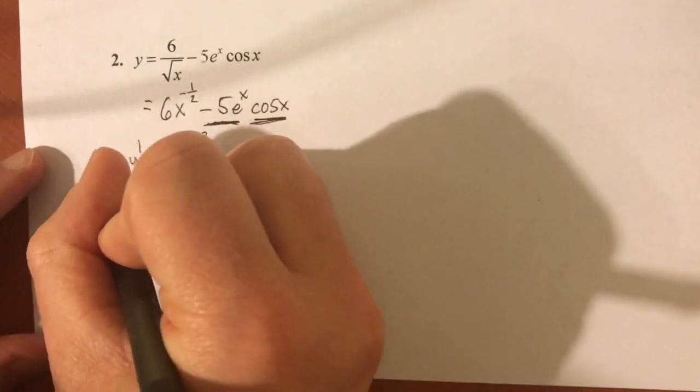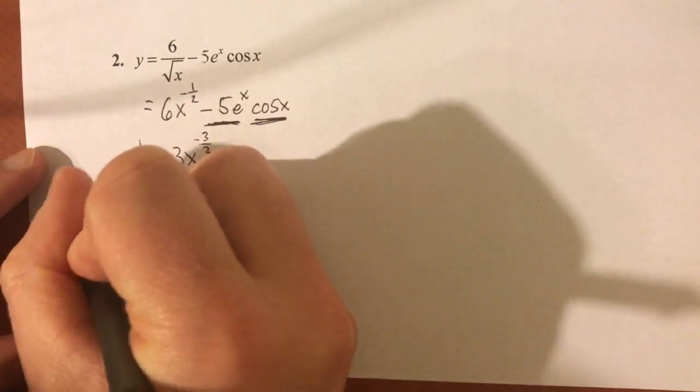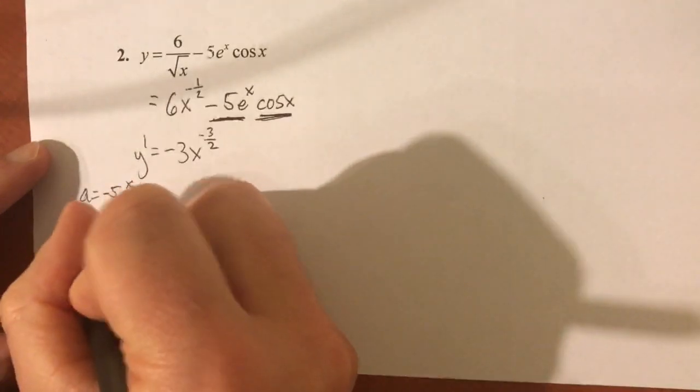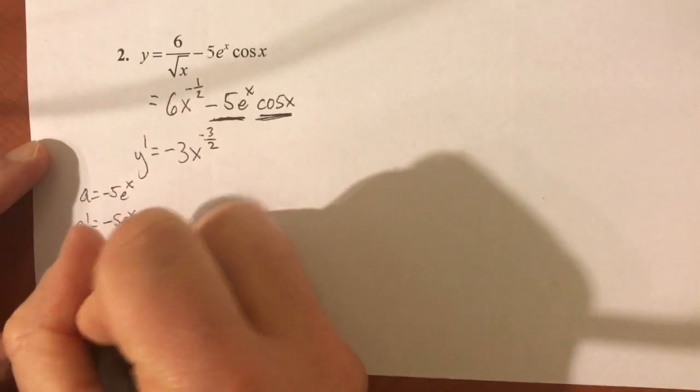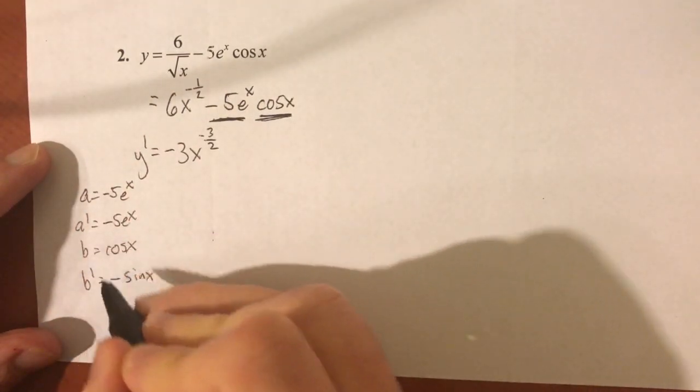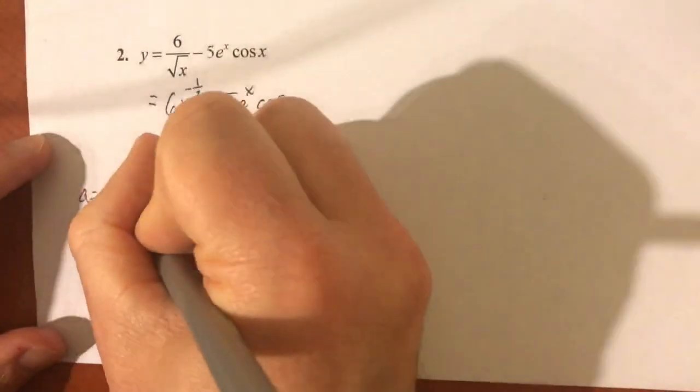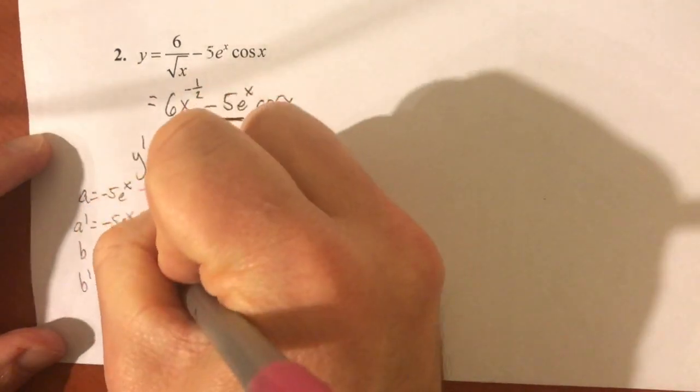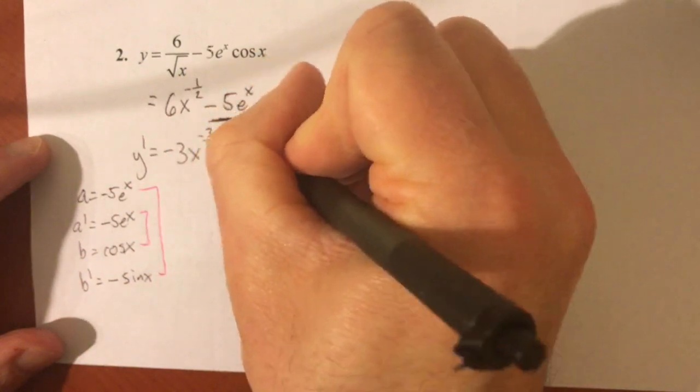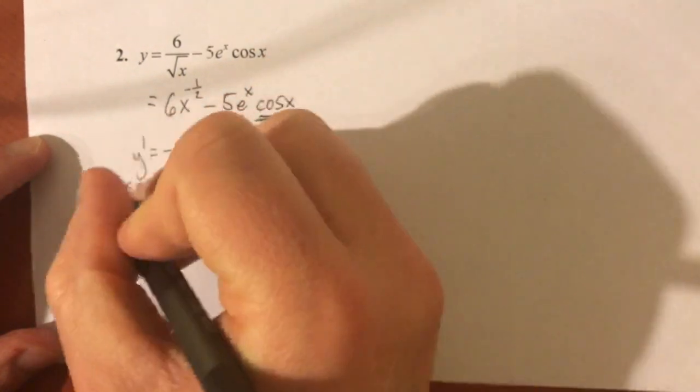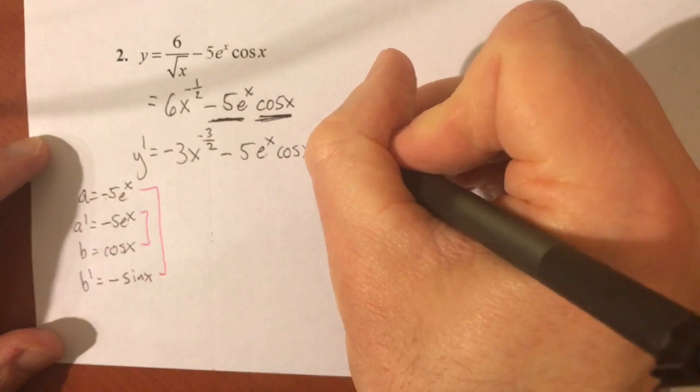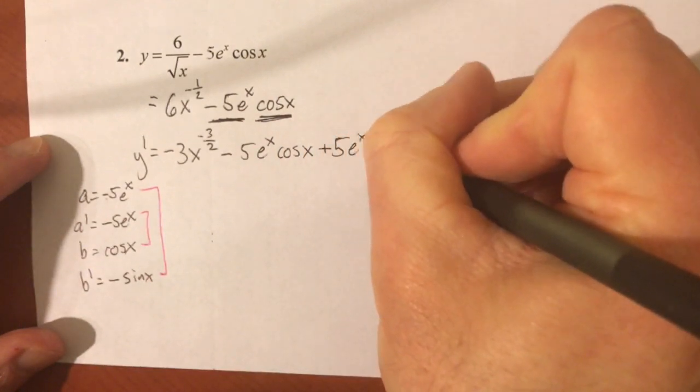But now it comes time to do the derivative of this portion. And notice, this is 5e to the x times cosine of x. That is a product rule. And I'm just going to include that negative 5e to the x with it. So be careful here, whether you do your little list off to the side like I do, or you do it in your head. That's fine. My first function is negative 5e to the x. And its derivative, a prime, is negative 5e to the x. The second function, b, is cosine of x. And its derivative, b prime, is negative sine of x. Remember, the derivative of any co function is going to be negative. And so now, product rule, product of these, plus product of these. Right? And so when you multiply these together, you get negative 5e to the x cosine of x.